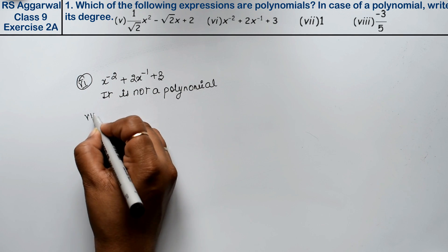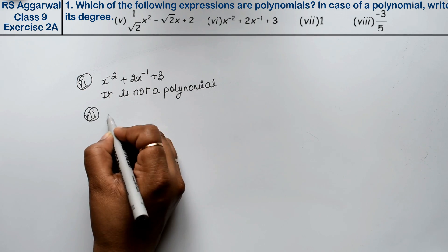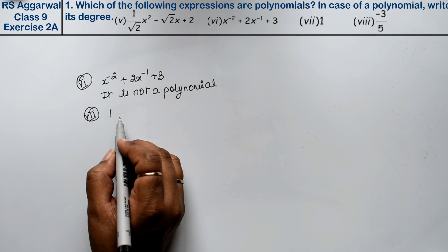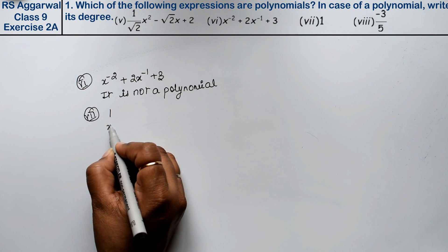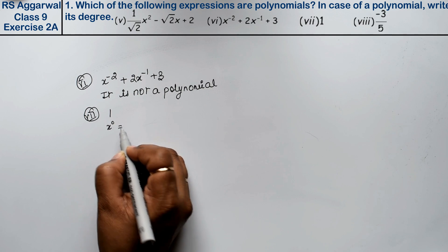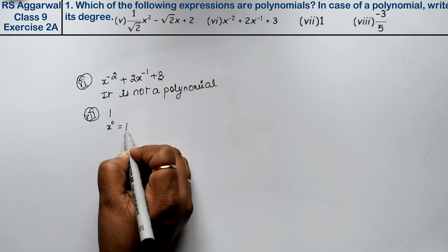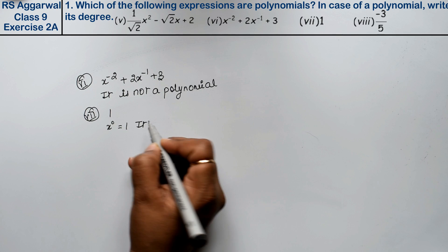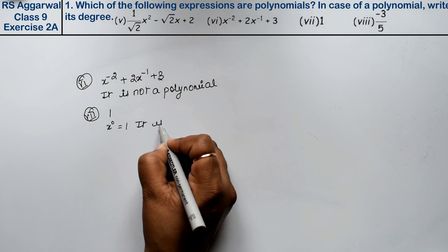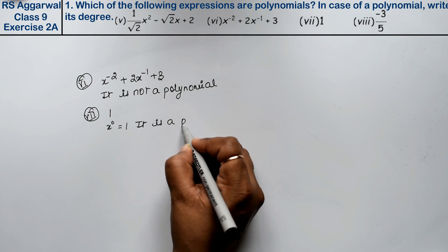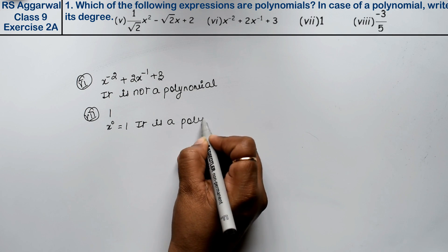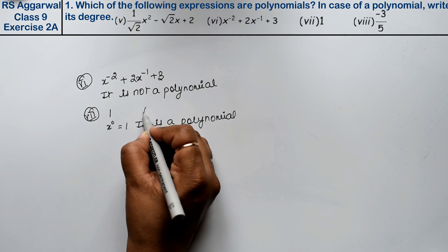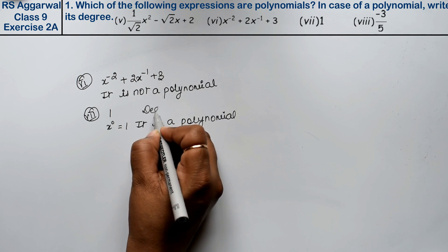Seventh part is 1. Why is this a polynomial? Because if we write x to the power 0, it equals 1 — it gives a constant. So it is a polynomial, and since x has the power 0 here, the degree is 0.